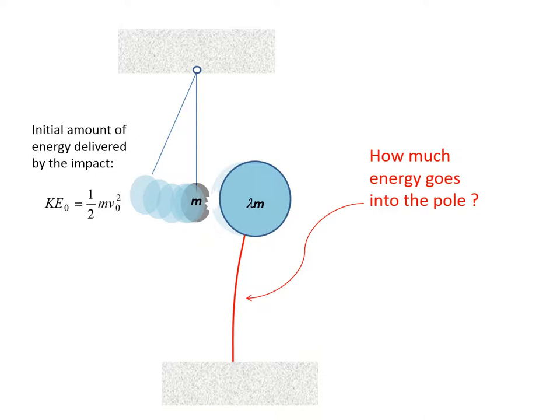To illustrate the fundamentals, let's look at the simple problem of a pendulum striking a lump mass which is supported on a pole. The amount of kinetic energy delivered by the impact is half mV naught squared. The question is how much of this energy goes into the pole.